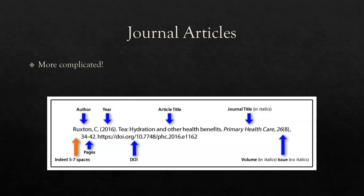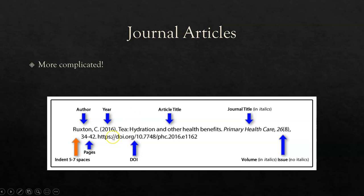Our next thing to look at are journal articles, and I'm going to warn you that these are more complicated — they take a lot more information than a book does. I have a graphic for you on screen that breaks down the pattern for a journal article. We start off with the author's last name, followed by a comma and then the first initial followed by a period, then a space. Then we have a bracket with the year of publication. APA says only the year goes in that bracket. Then a period. The next thing is the article title.